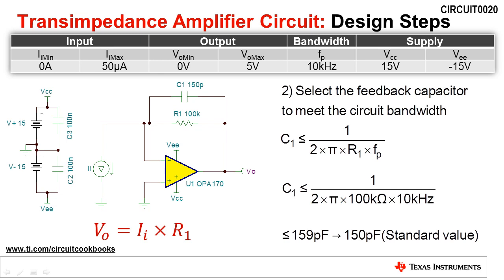The next step is to calculate the feedback capacitor. Transimpedance circuits require a feedback capacitor to remain stable. The feedback capacitor also defines the closed loop bandwidth and can be calculated based on the feedback resistor and the circuit bandwidth.